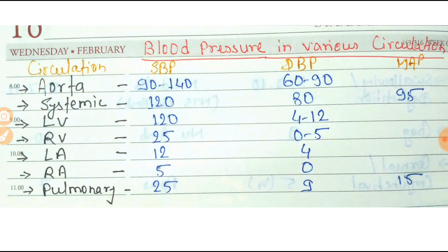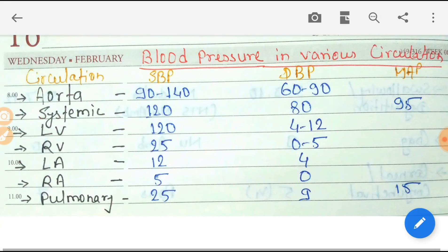Systemic blood pressure: systolic is 120, diastolic is 80, and mean arterial pressure is 95. In the aorta, systolic is 90 to 140 mm of Hg while diastolic blood pressure is 60 to 90 mm of Hg. This topic is a most commonly asked question.